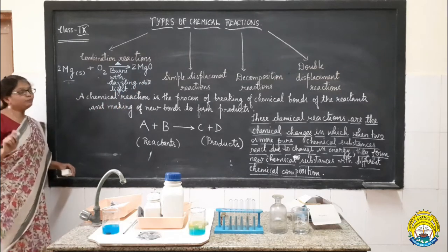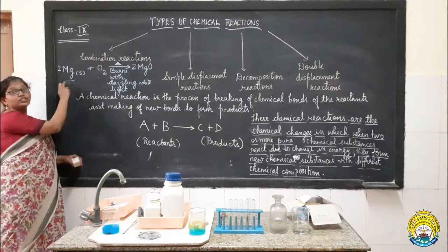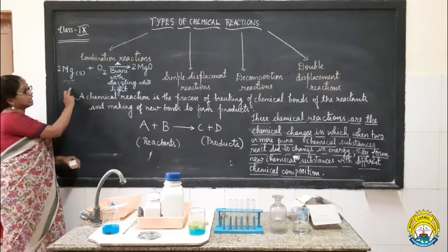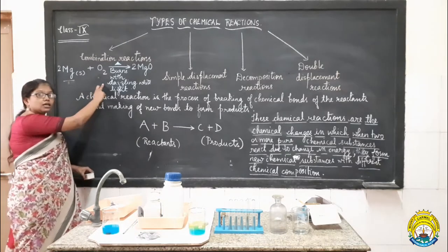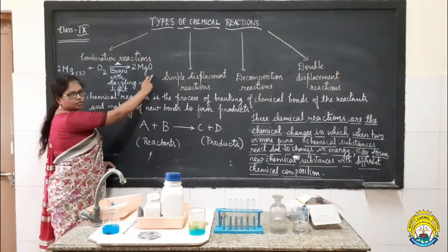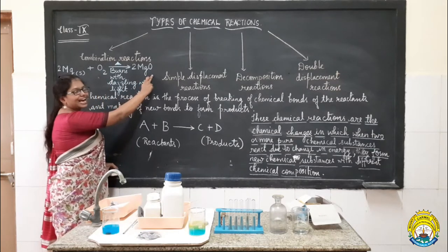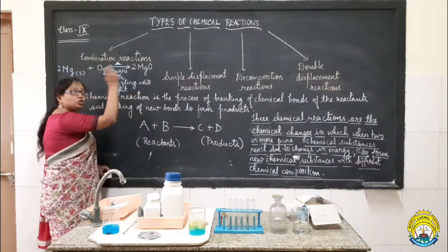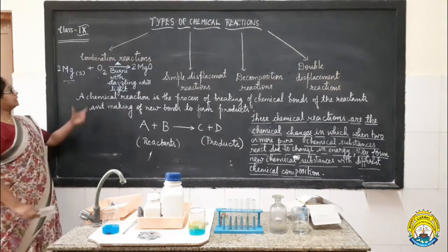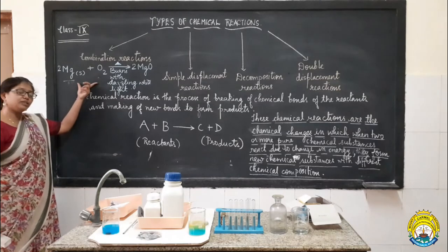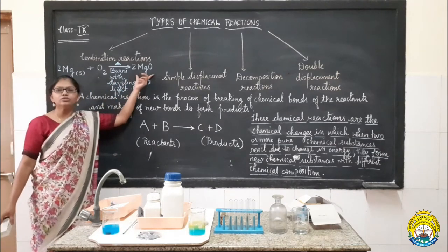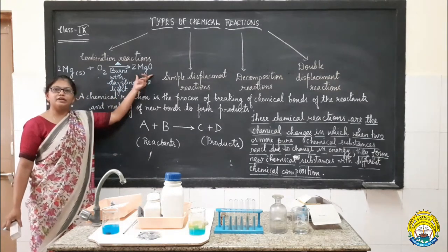What we have observed here is that magnesium metal, which has a very different chemical composition, is getting reacted with oxygen gas, which again has a different chemical composition, to form a substance which again has a different chemical composition. So what type of change is this, in which two chemical substances with different chemical compositions react to produce a new substance with a different chemical composition?